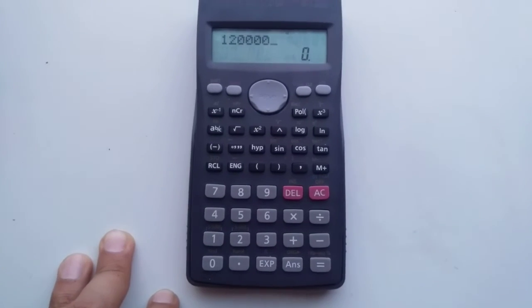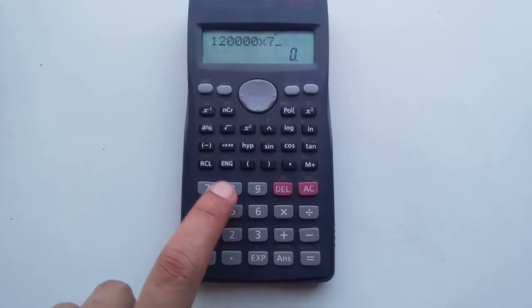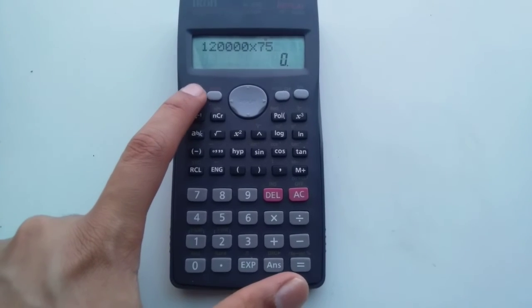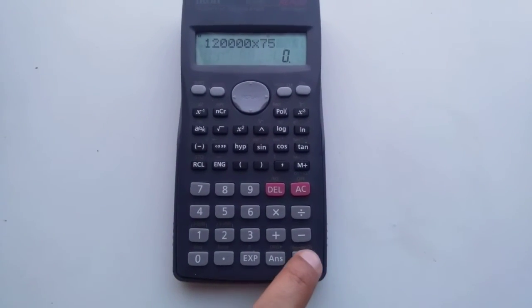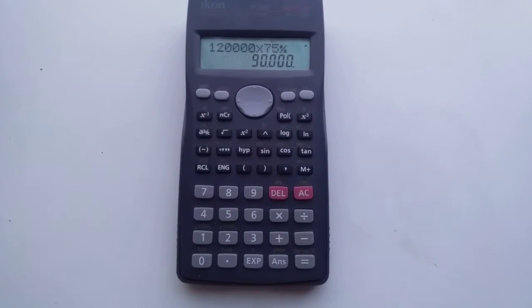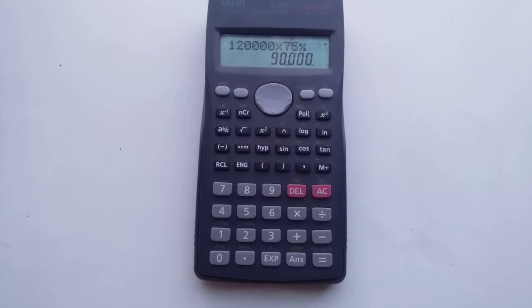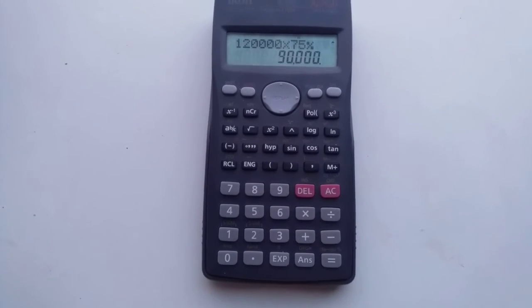Simple, you have to multiply 75, then you have to press shift, and then you have to press equal sign. So 90,000 is the 75% of 120,000.